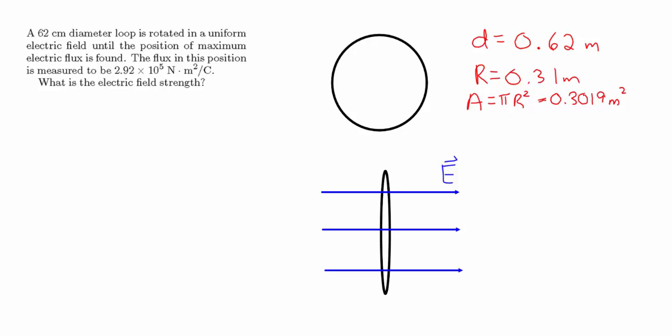In this problem we have a circular area and the area vector is perpendicular to the plane of the circle. We're told that this loop is rotated so that the maximum electric flux is found. That means the electric field is perpendicular to the plane of the circle, or the electric field is parallel to the area vector, to get the maximum flux through that circle.